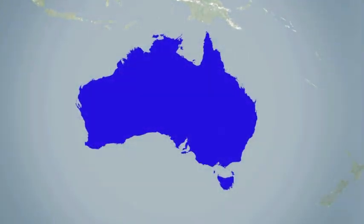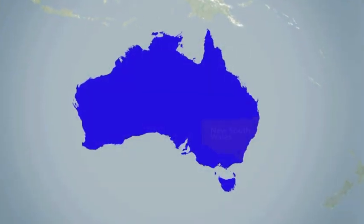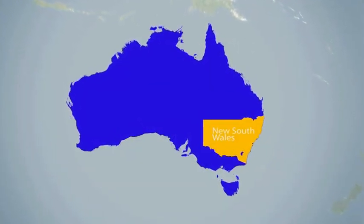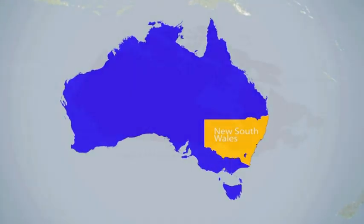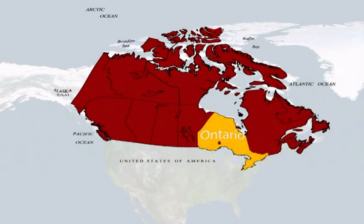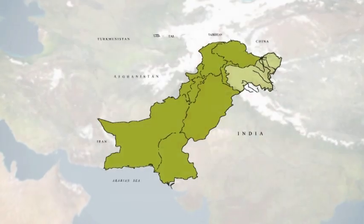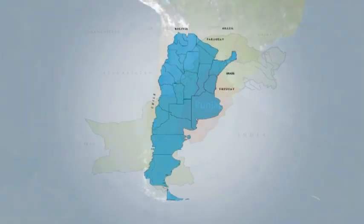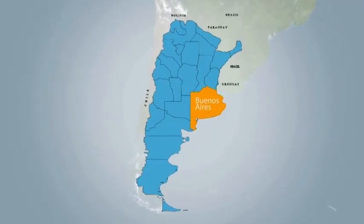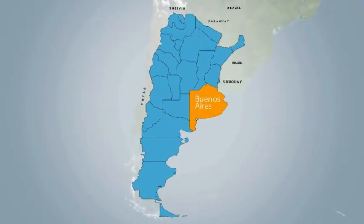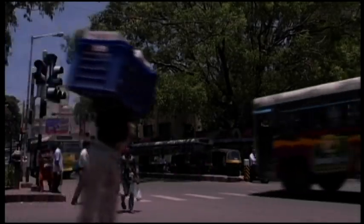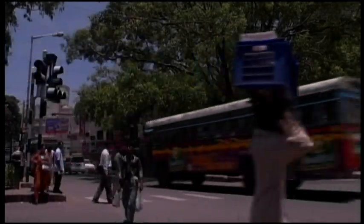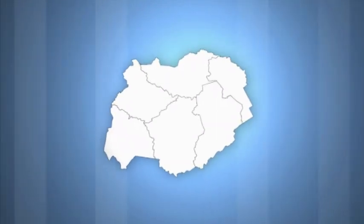A number of federal countries have only four or five units — Pakistan is one of these. In some countries, one unit is much bigger in population than the others. This is true for Australia, Canada, Pakistan, and Argentina. In many others, such as the United States or India, there is no large and dominant constituent unit.